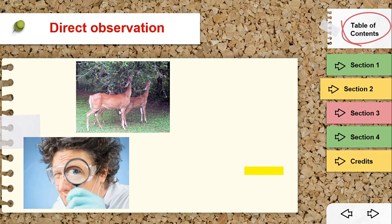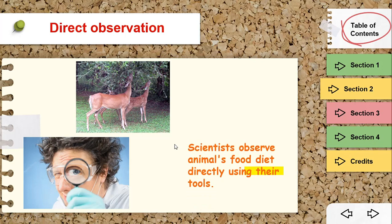For example, if he is studying the deer, he will observe that the deer eats plants and tree leaves. This is direct observation: scientists observe an animal's food diet directly using their tools, such as the magnifier and the camera.